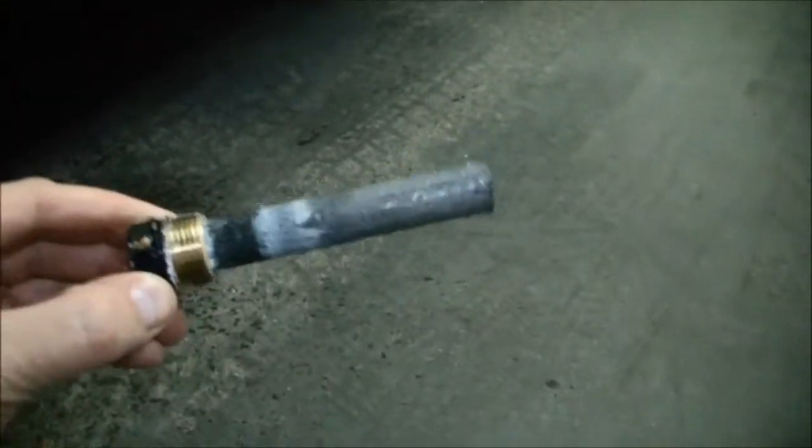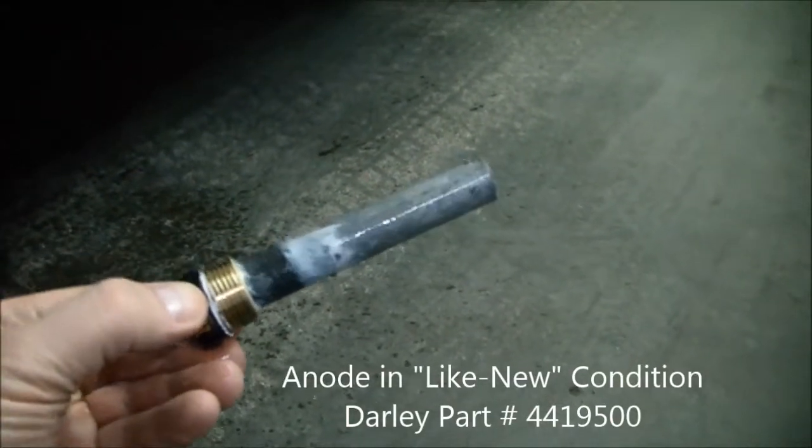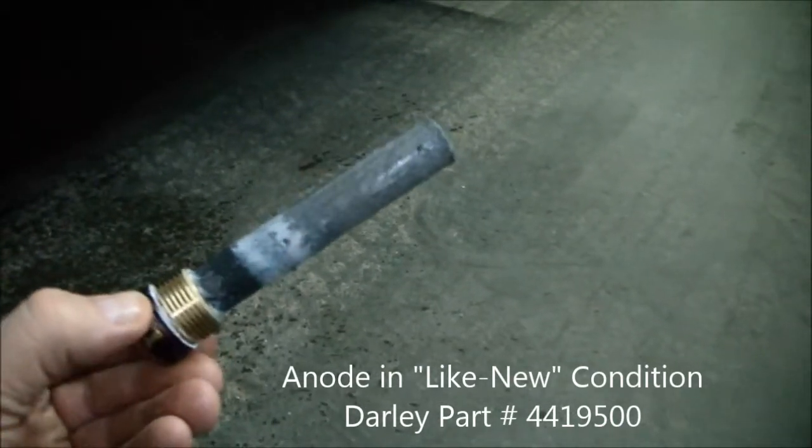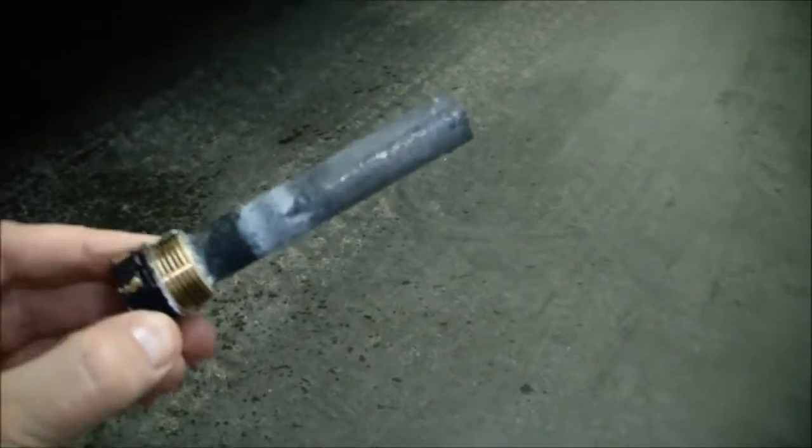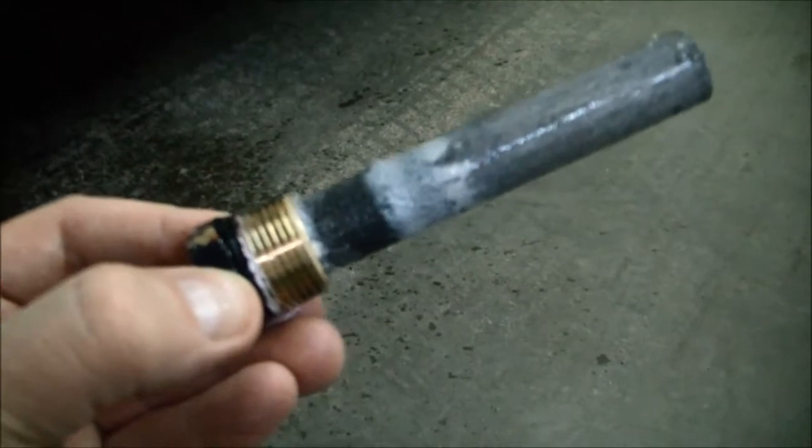So as I mentioned before this anode is in great shape as it should be. The pump is brand new. What I will be doing is putting on some white Teflon thread tape. It's some half inch wide thread tape. We'll put this thread tape back onto these threads and put that anode back into position and tighten it back up.